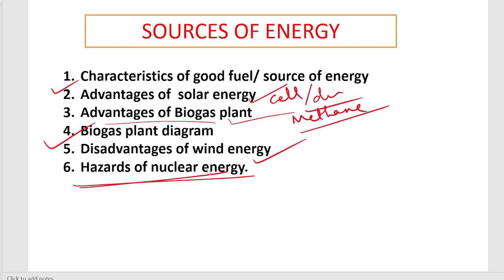You should write about hazards referring to what is given in the textbook. That covers the concept-wise questions from Physics. Now for diagrams: Ohm's Law circuit diagram, motor and generator diagrams, and biogas plant diagram - these are the main ones. From these diagrams alone, you can expect 5 to 6 marks in Physics.